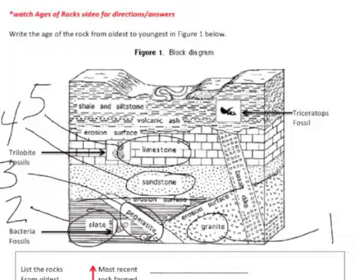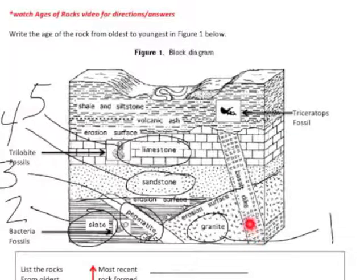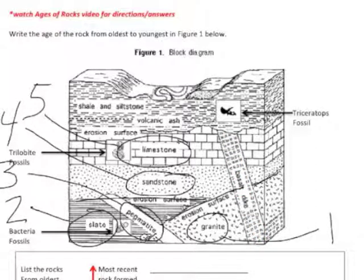And then, using the Law of Cross-Cutting Relations, the basalt cuts through it. It actually melted through the granite and the sandstone and the limestone — as lava kind of melted the rock and formed this basalt here. So basalt cut through the existing rock, and so basalt is younger. Basalt is number 6.